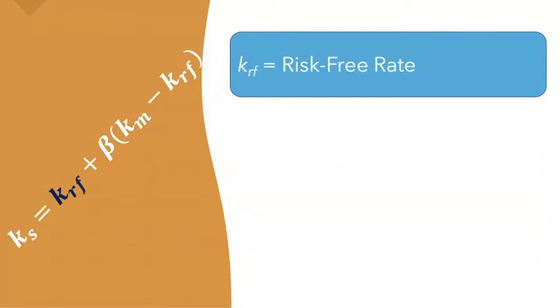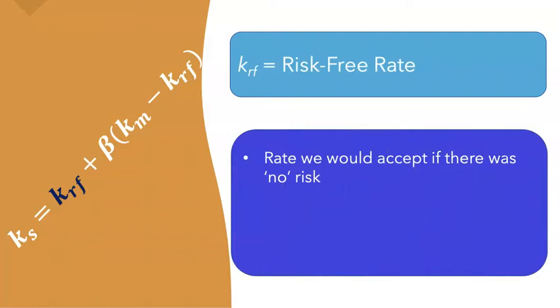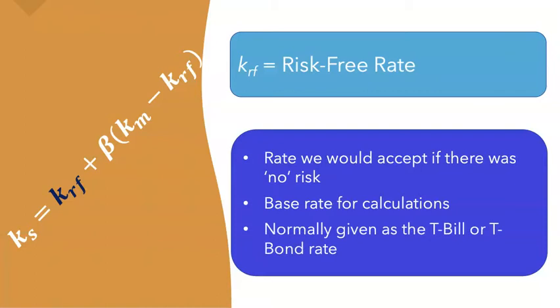The risk-free rate, KRF, is the rate that we would accept if there is basically no risk. It's a base rate for calculation since it's the rate for no risk. Any risk that we accept, we must be compensated for — this is part of being a risk-averse investor. Risk-averse means that to accept more risk requires greater compensation in the form of a greater return. The risk-free rate is normally given as either the T-bill rate or the treasury bond rate.